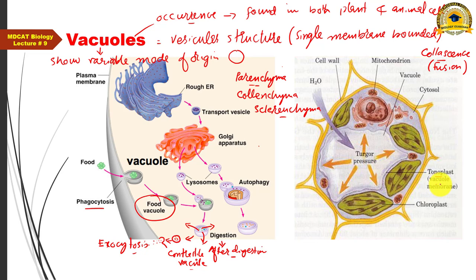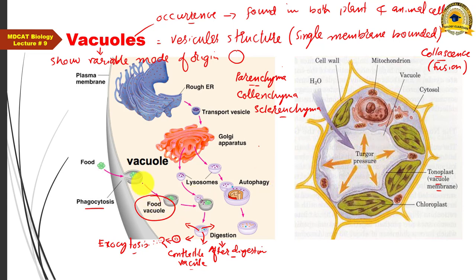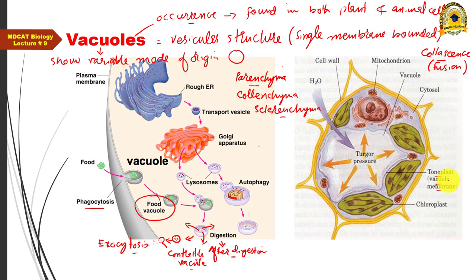This vacuole has a specialized membrane called the tonoplast. The tonoplast is the vacuole membrane of the plant cell vacuole. This term is not used for the membrane of animal cell vacuoles — tonoplast applies only to the membrane of plant cell vacuoles.